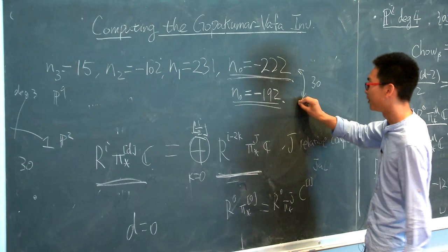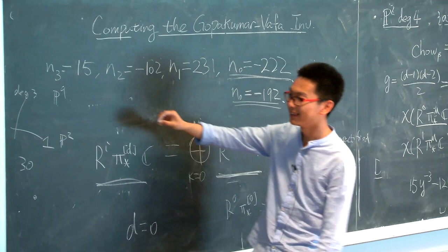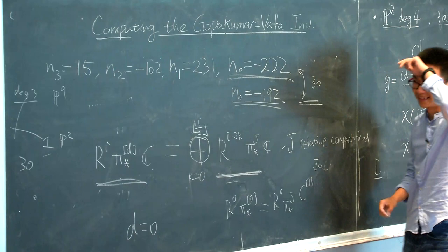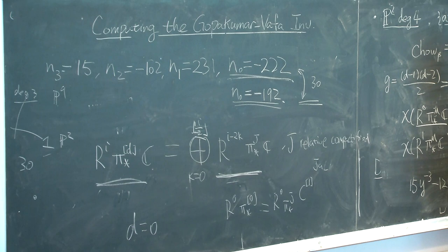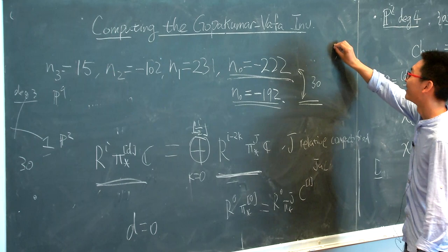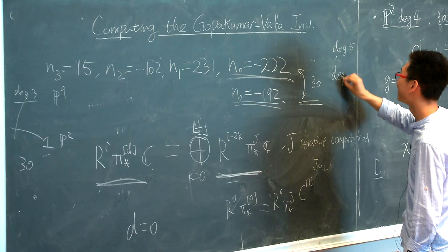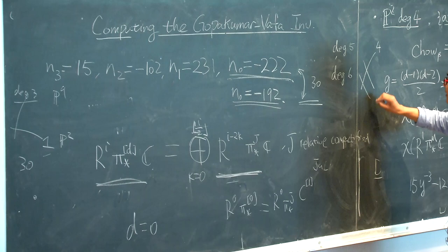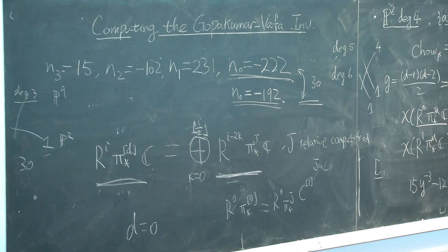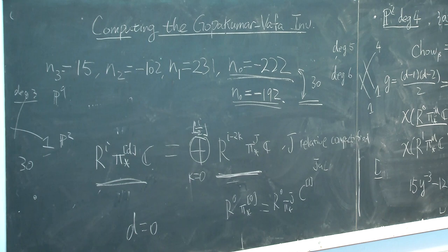Here comes the problem: the physicist predicts N_0 should not be -222 but rather -192. The formula is based on the assumption that all curves are integral, but the degree 4 curve can split into a degree 3 curve and a degree 1 curve. The moduli space of this degeneration (P9 times P2) has Euler characteristic 30 — exactly the discrepancy. What we can prove is that the correction comes from the degeneration into the degree 3 and degree 1 curve via a perverse shift calculation. This method currently works for degree up to 5; for degree 6 there are more degenerations and the corrections are not yet fully understood. That's all of my presentation. Thank you.